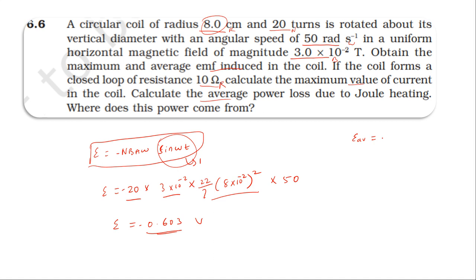For average EMF: it's in the form of integral over the integral of sine omega t over a loop, 0 to T. Average EMF is 0 over one loop.